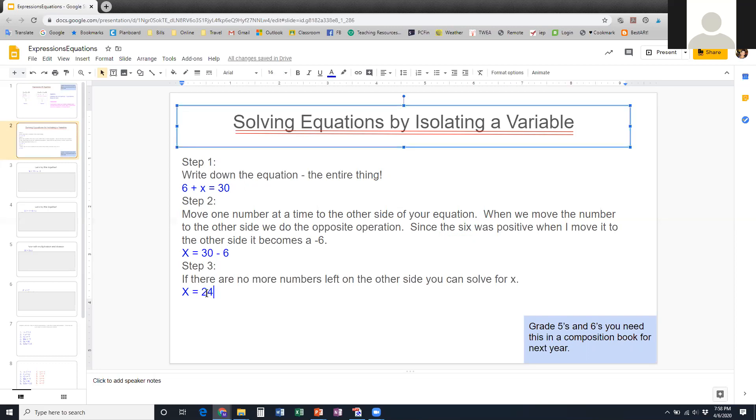So 30 minus 6, and then we've got x by itself. When you have the letter by itself, the variable by itself, and you only have one number left here, then you have solved the equation. So if there's no more numbers left on the other side, you can solve for x.